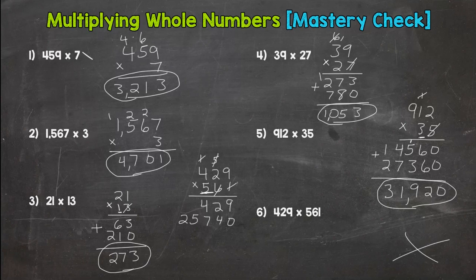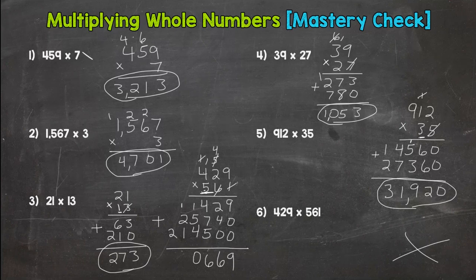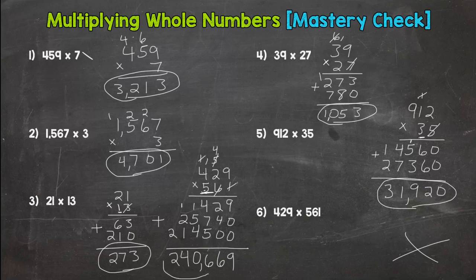This 5 right here, value is 500, so I need two placeholder zeros. 5 times 9 is 45. 5 times 2 is 10 plus 4 is 14. 5 times 4 is 20 plus 1 is 21. Add these up, we get 9, 6, 11 plus 5 is 16, a 10 here, 4 and 2. So 240,669.